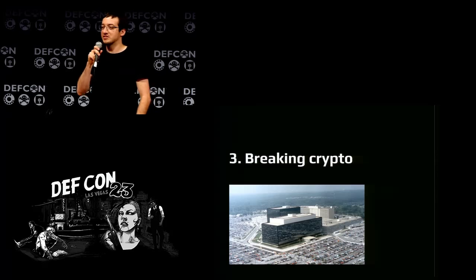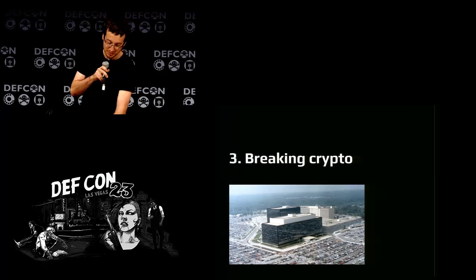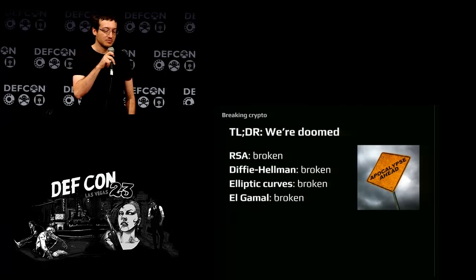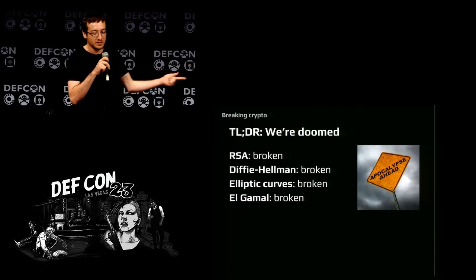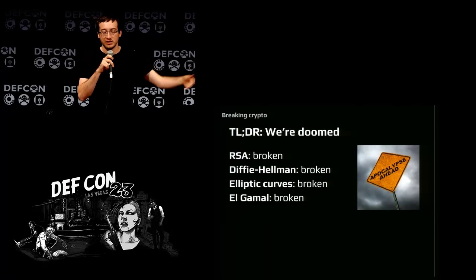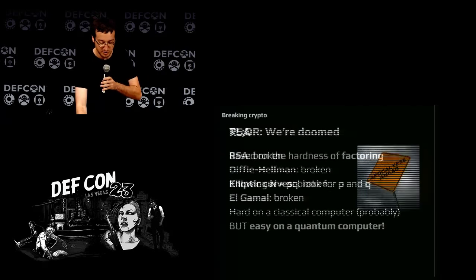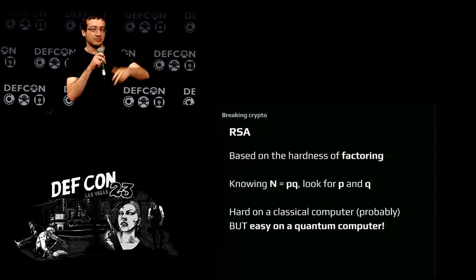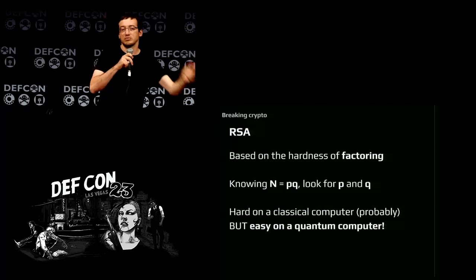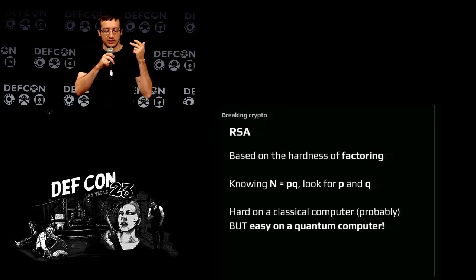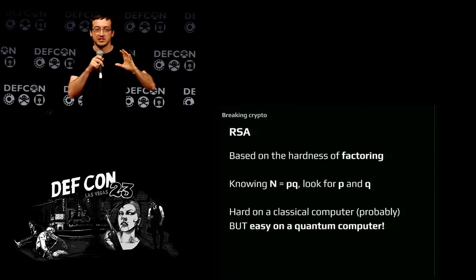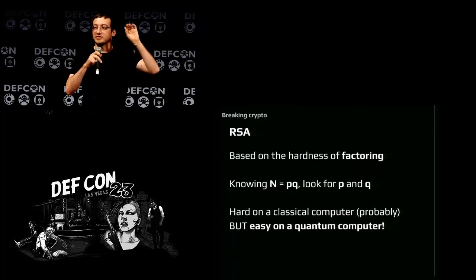Breaking cryptography: the NSA probably doesn't have a quantum computer. But if one appears tomorrow, RSA is broken — and even the elliptic-curve version of Diffie-Hellman won't be hard to break. RSA is based on the hardness of factoring numbers: if you can factor, you can break RSA and vice versa. It's hard on a classical computer — we don't have a formal mathematical proof, but cryptographers and mathematicians are pretty much convinced. It's not an NP-complete problem, but it is classically hard.